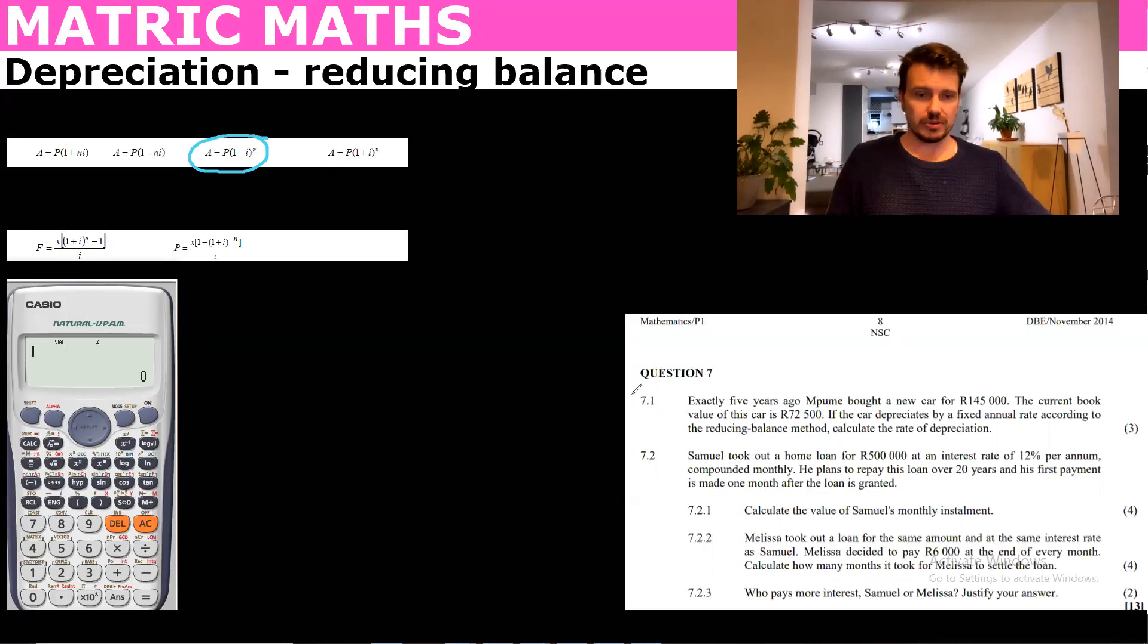So I want to use this question here which says exactly five years ago Naomi bought a new car for $145,000 and its current value is now $72,500. We're going to just write out the formula: A equals P times (1 minus i) to the power of n, and they want to know the rate of depreciation.